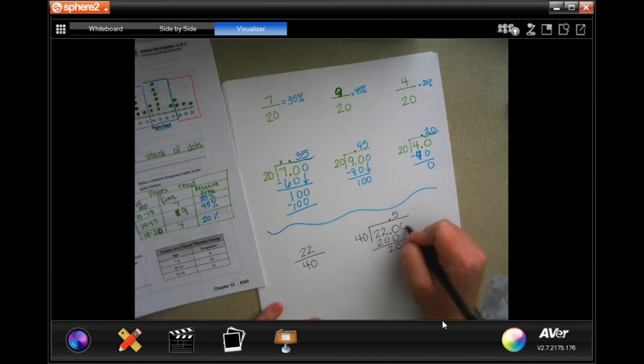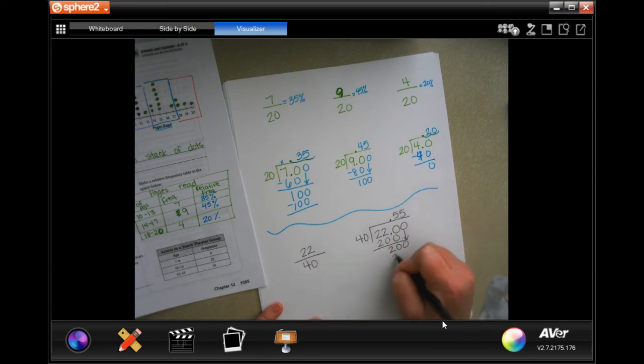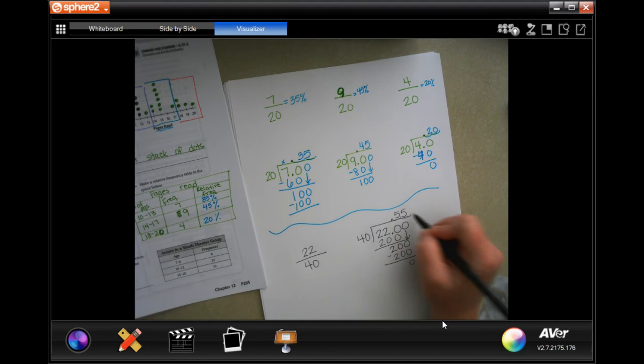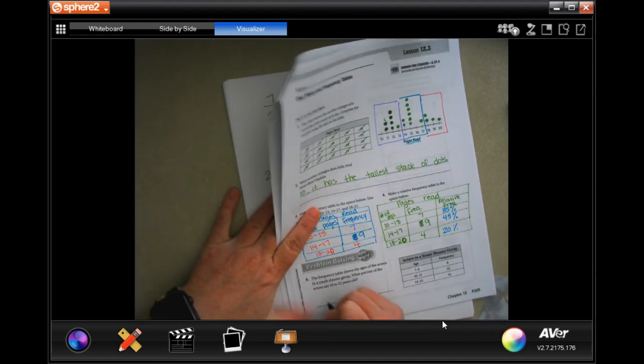20 is smaller than 40, so I'm going to add a zero, bring it down. Now I have 200 again, which we just said was 5. So remember to move your decimal two times for the percent, which means 55 percent.